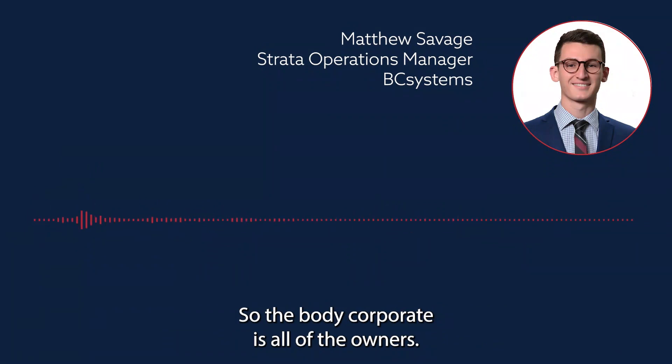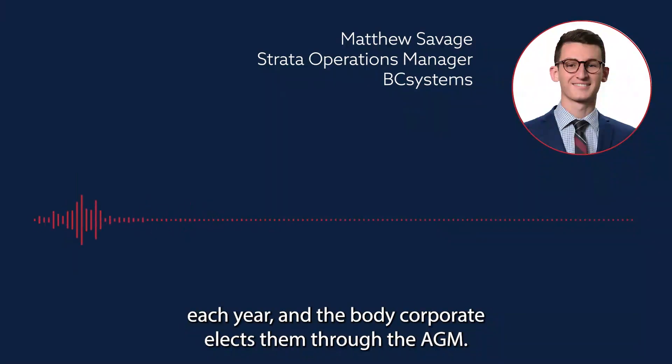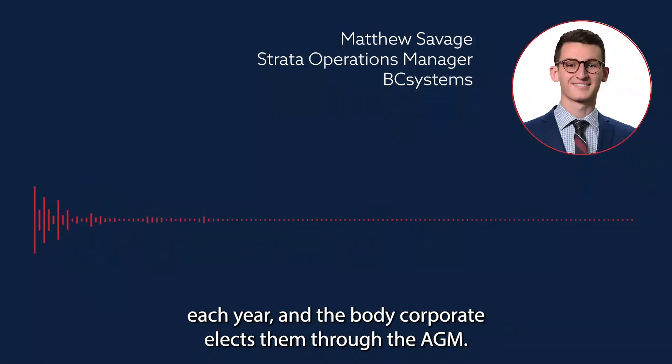So the body corporate is all of the owners. The committee is the elected group each year, and the body corporate elects them through the AGM.